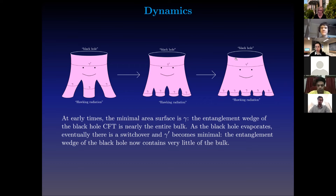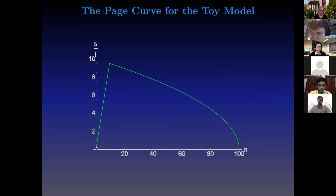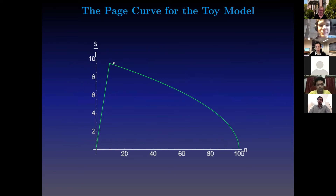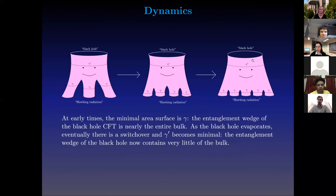After the switchover, the entanglement wedge of the black hole is very small, and the entanglement wedge of the radiation is quite large — almost the entirety of the bulk. This feature gives us precisely a Page curve. The entropy increases during the phase where we are evaporating more and more exits, since the area of each exit is fixed. But eventually there's a switchover between the dominating extremal surfaces, and then the entropy begins to decrease because as we evaporate more of these, the area of gamma prime decreases since we're conserving energy.